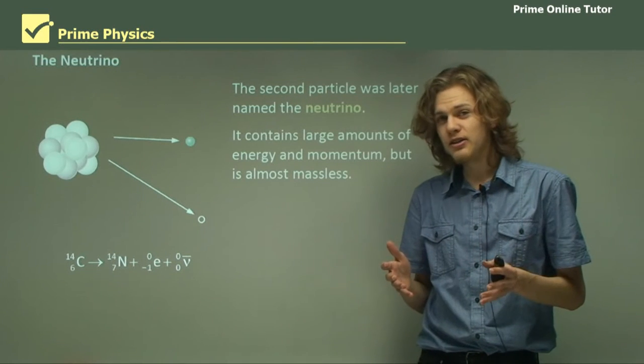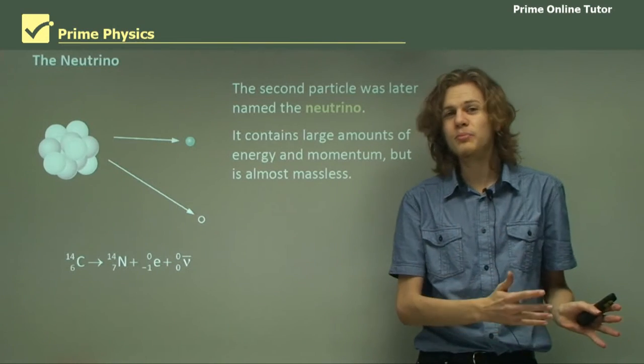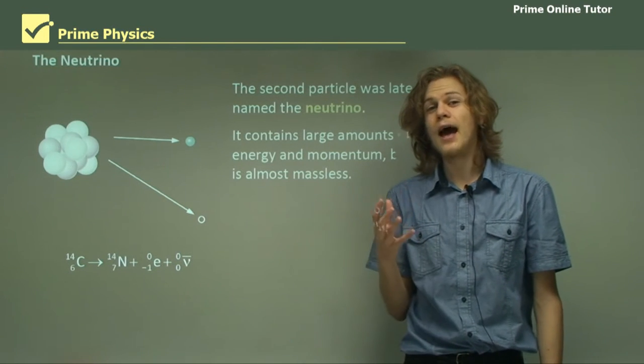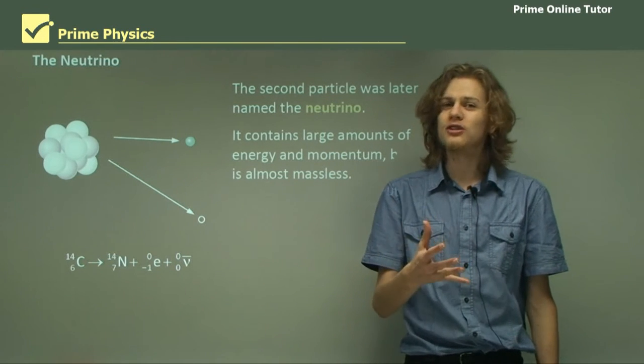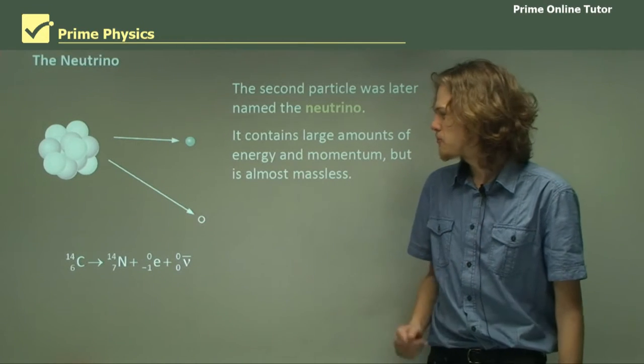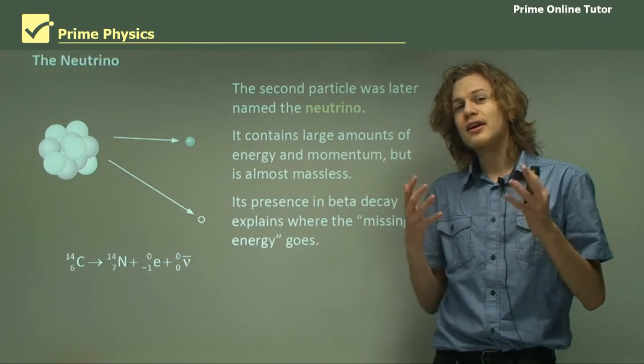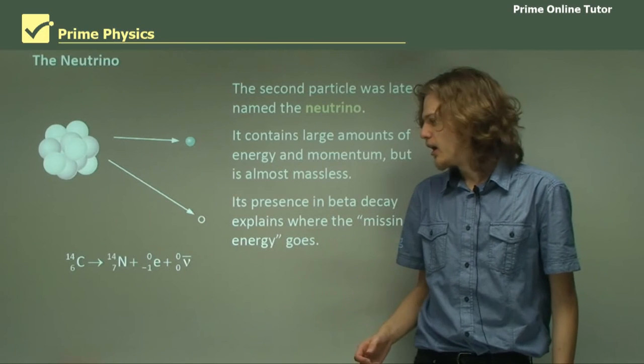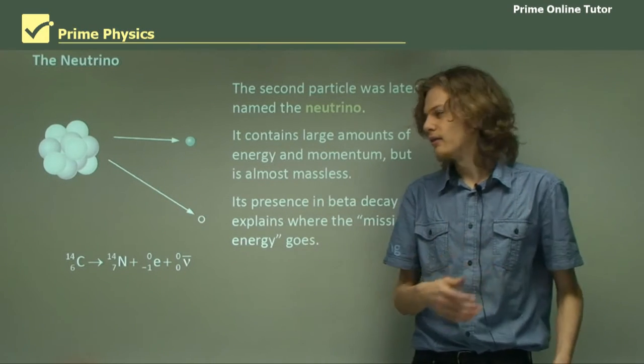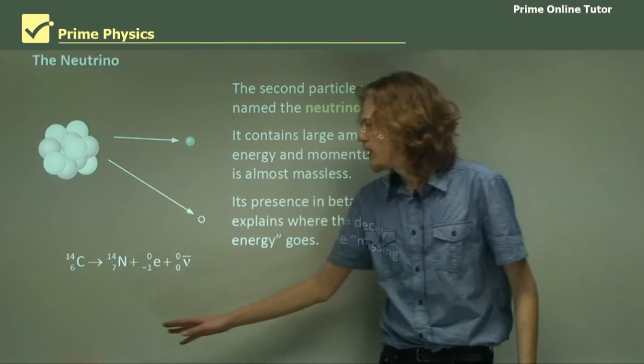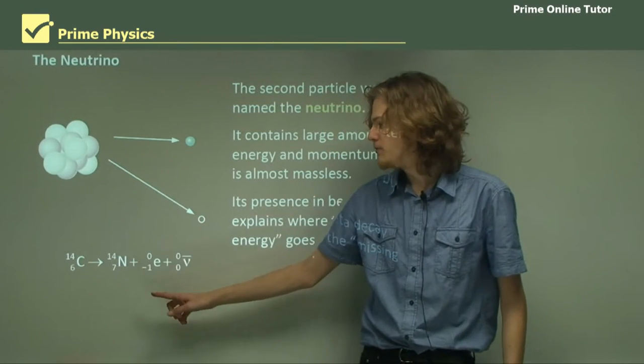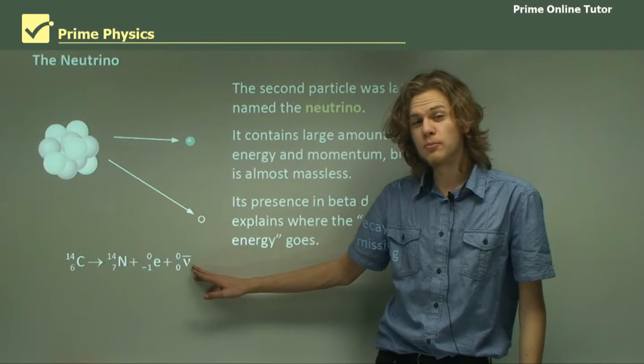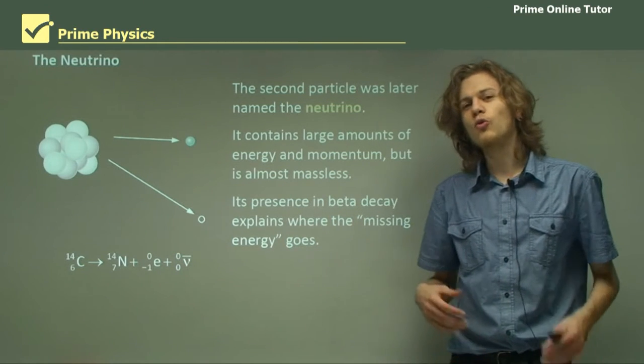It contains large amounts of energy because it's got to account for the missing energy in beta decay, but it's almost massless. For a long time, people didn't even think neutrinos had mass, but very recently some experiments have shown that they probably do. Its presence in beta decay explains where the missing energy goes. We can see here a modified equation for beta decay.